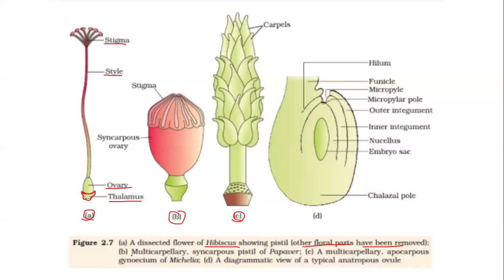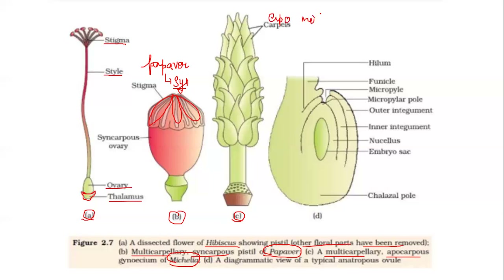Diagram B is a multicarpellary syncarpous pistil of Papaver. Diagram C is a multicarpellary but apocarpous gynoecium of Michelia. Both are multicarpellary, but Papaver is syncarpous — that is, fused together — while Michelia shows the apocarpous condition with free carpels.